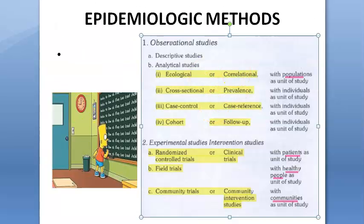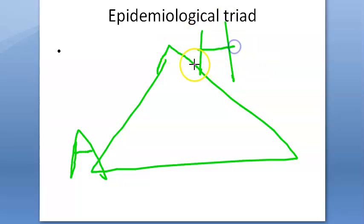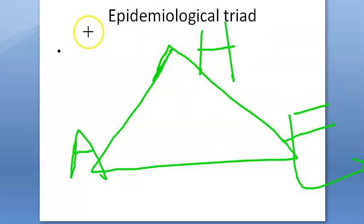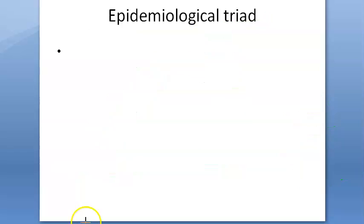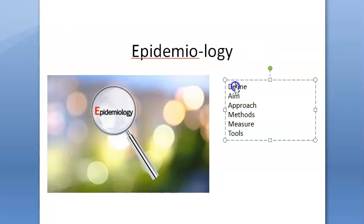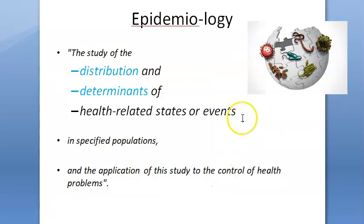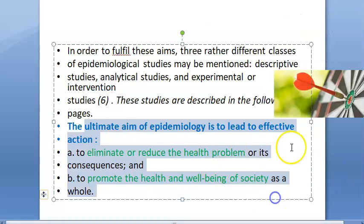The epidemiological triad: you have an agent — like a bacteria — a susceptible host such as a human, and the agent causes disease in the host if the environment is favorable. So the triad is agent, host, and environment. After this video, you should be able to write the definition, aims, and ultimate aims of epidemiology in the exam.